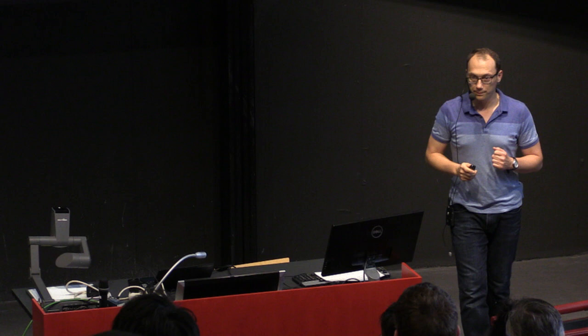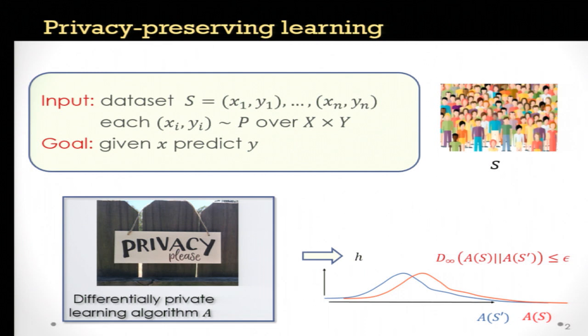This approach to ensuring privacy has been studied for over 10 years. We know that for many learning problems one can ensure privacy with relatively little overhead. But we also know that for some basic learning problems there is an inherent trade-off between privacy and accuracy, and this trade-off is particularly bad in high dimensions.